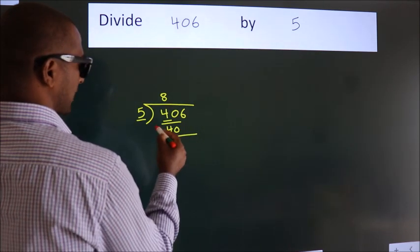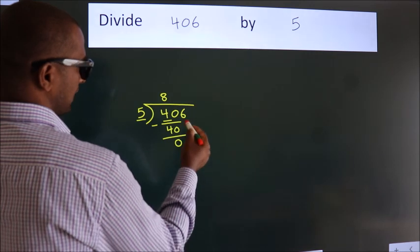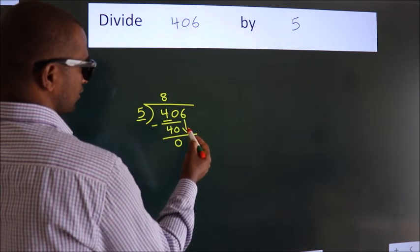Now we should subtract, we get 0. After this, bring down the beside number. So 6 down.